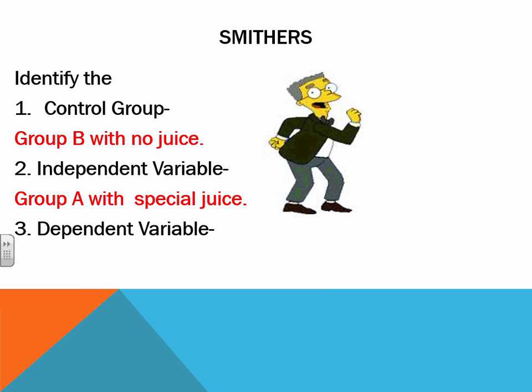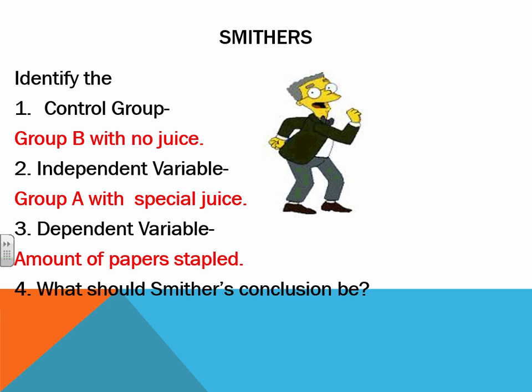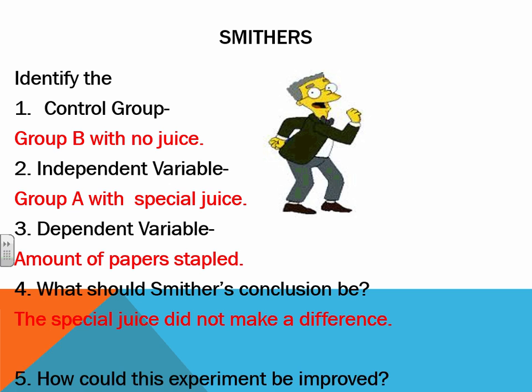The dependent variable is going to be the amount of paper stapled. What should Smithers' conclusion be? The special juice did not make a difference.